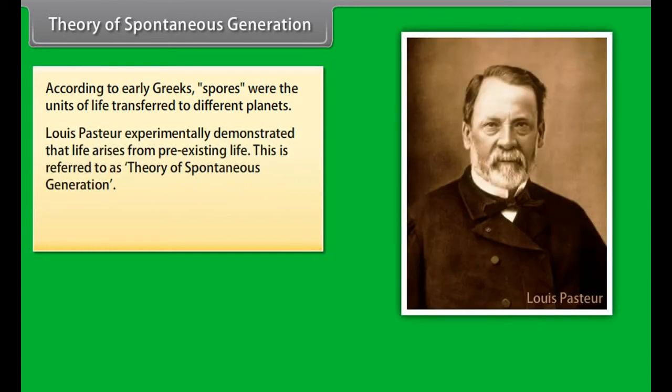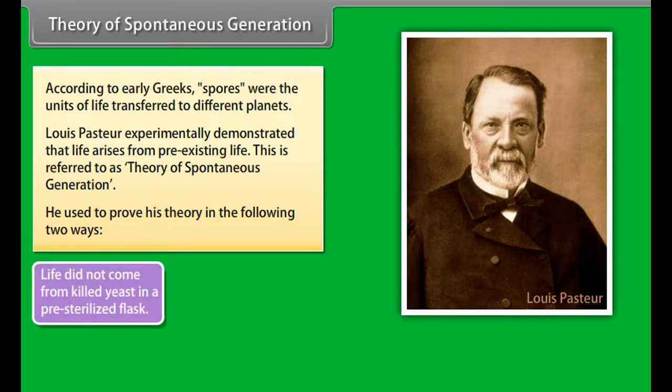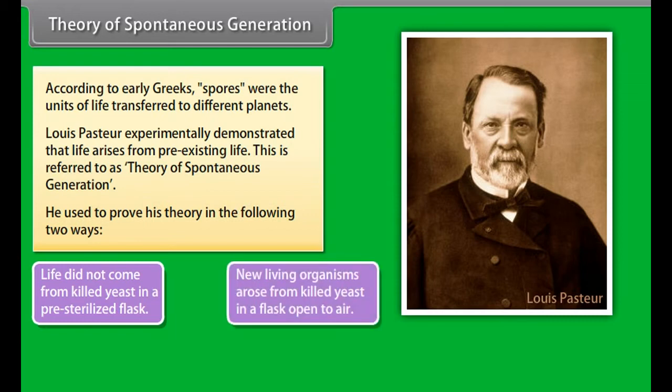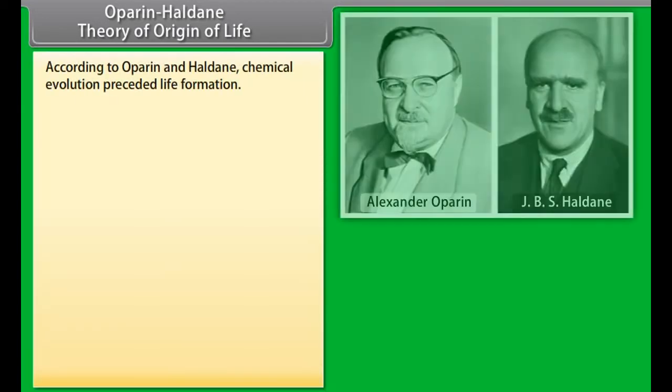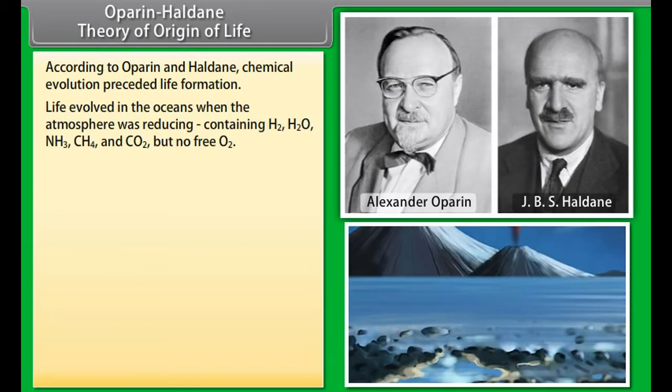According to early Greeks, spores were the units of life transferred to different planets. Louis Pasteur experimentally demonstrated that life arises from pre-existing life. This is referred to as Theory of spontaneous generation. He used to prove his theory in the following two ways. Life did not come from killed yeast in a pre-sterilized flask. New living organisms arose from killed yeast in a flask open to air. Thus, life comes only from pre-existing life.